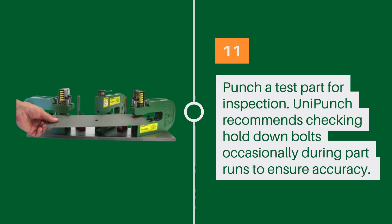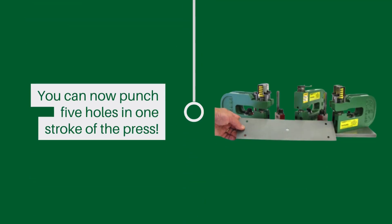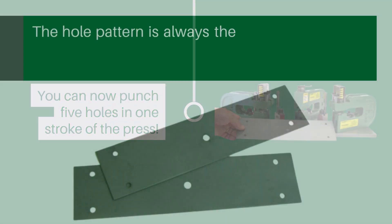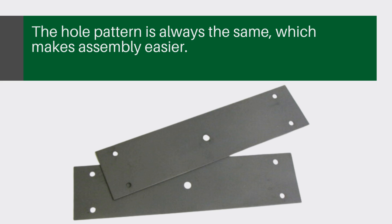UniPunch recommends checking hold down bolts occasionally during part runs to ensure accuracy. You can now punch five holes in one stroke of the press. The hole pattern is always the same which makes assembly easier.